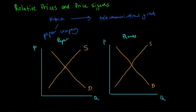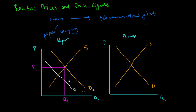Let's say initially the equilibrium price of paper was at P1, and the equilibrium quantity traded was at Q1. For whatever reason, the demand for paper goes down, and we see a shift in the demand curve of paper from D1 to D2. Using simple demand and supply analysis, we reach a new equilibrium point at P2 and Q2. This means the equilibrium price and the equilibrium quantity traded of paper has decreased.